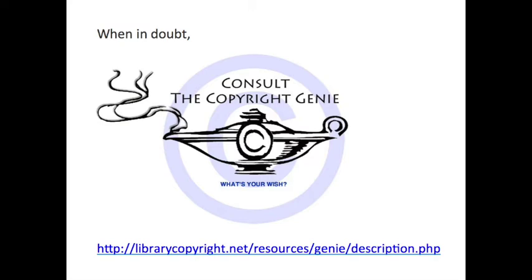We've shared a lot of information about the public domain. I also want to point you to a resource called the Copyright Genie, linked from the end of this presentation and easily Googleable, which helps you walk through the process we just explored to determine the copyright status of a particular item. It's a useful tool for navigating some of these specific particulars of determining whether an item is in the public domain or under copyright.